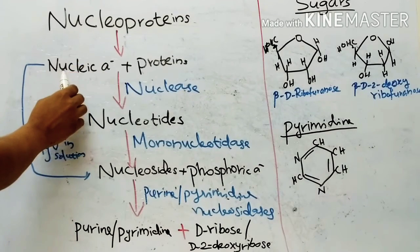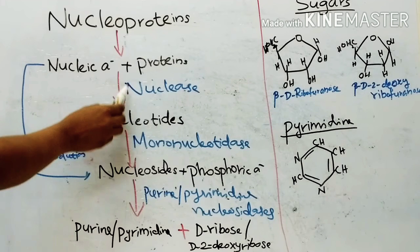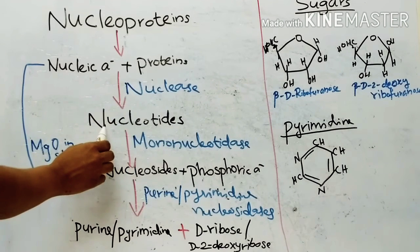Thus, nucleoproteins first on hydrolysis will give nucleic acid and proteins. Then in the presence of nuclease, it will give nucleotides.